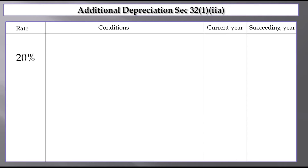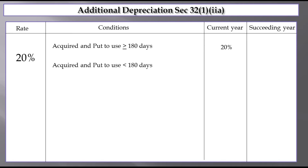This is the case of additional depreciation. We will be looking at the conditions of depreciation — rate, conditions, current year, succeeding year. The rate is 20%. Condition: acquired and put to use for more than or equal to 180 days — depreciation will be 20%. We will claim deduction and additional depreciation in that particular previous year.